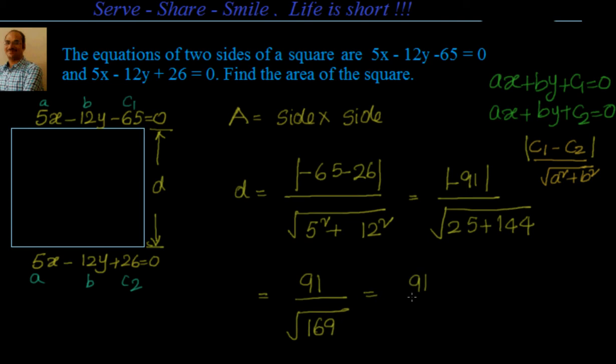So we know that D is equal to 7. Once we know D, it's very easy to find out the area. Area equal to 7 into 7, that is equal to 49 square units.